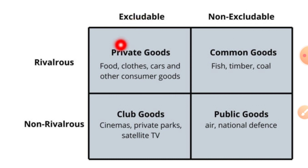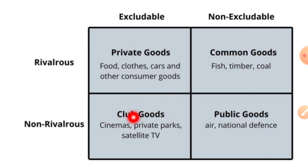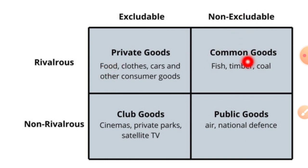A pure public good is non-excludable and non-rival. A common good is non-excludable. A club good is non-rival but excludable. Public transportation is not an example of a pure public good.